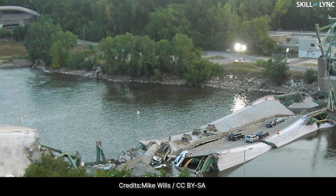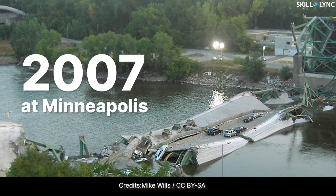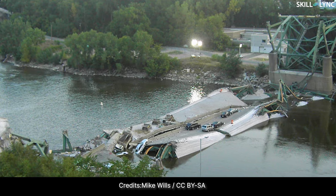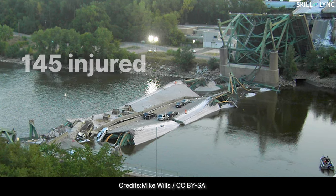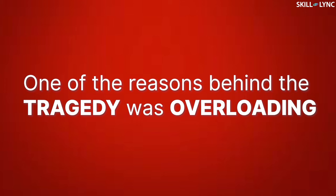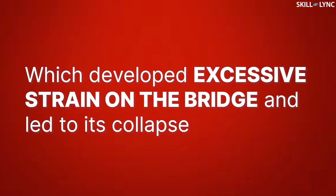Hey guys, welcome back to our channel. Given here are the images from a tragedy that happened in 2007 at Minneapolis - a bridge collapse over the Mississippi River where 13 people were killed and 145 injured. One of the reasons behind the tragedy was overloading, which developed excessive strain on the bridge and led to its collapse.